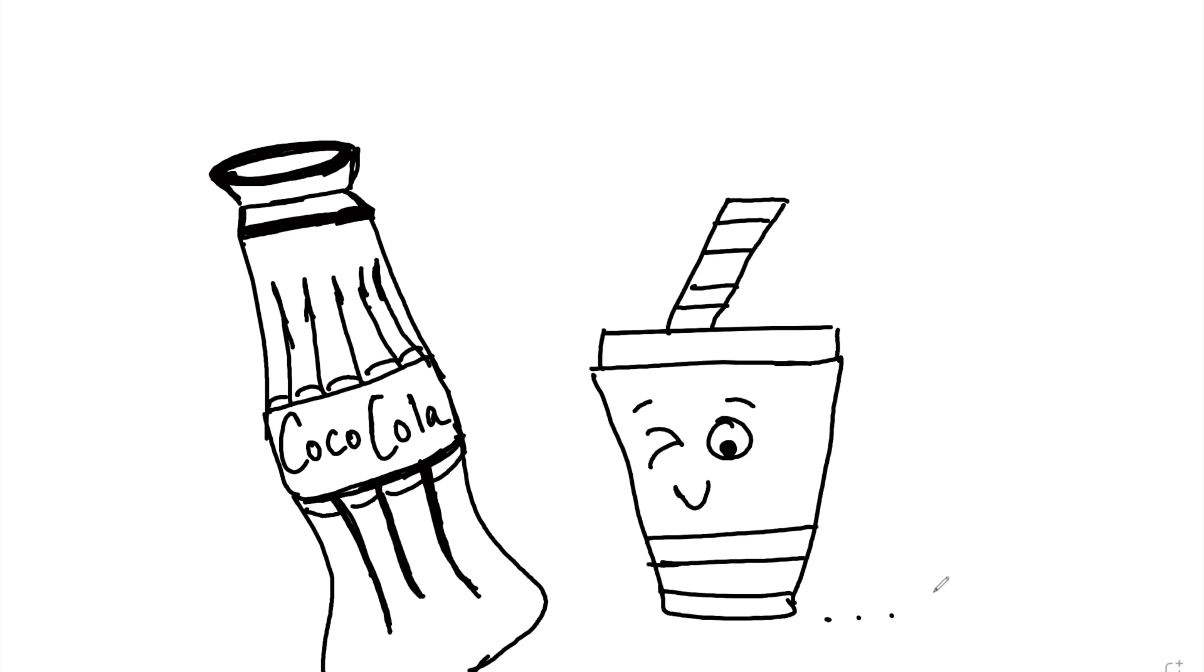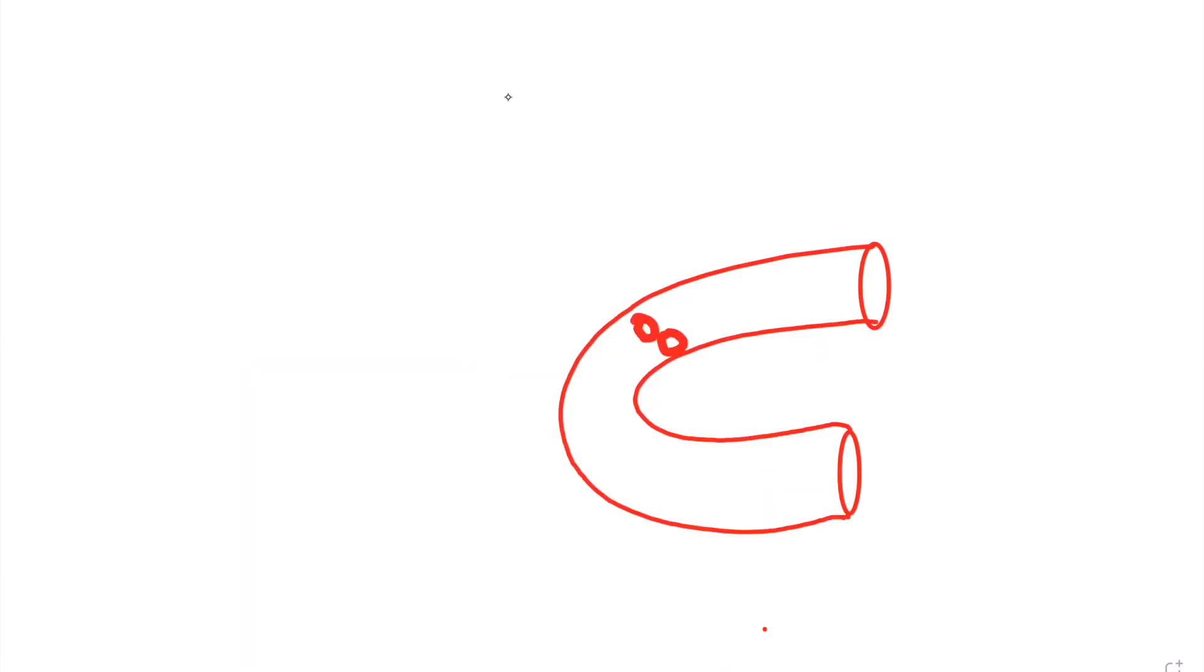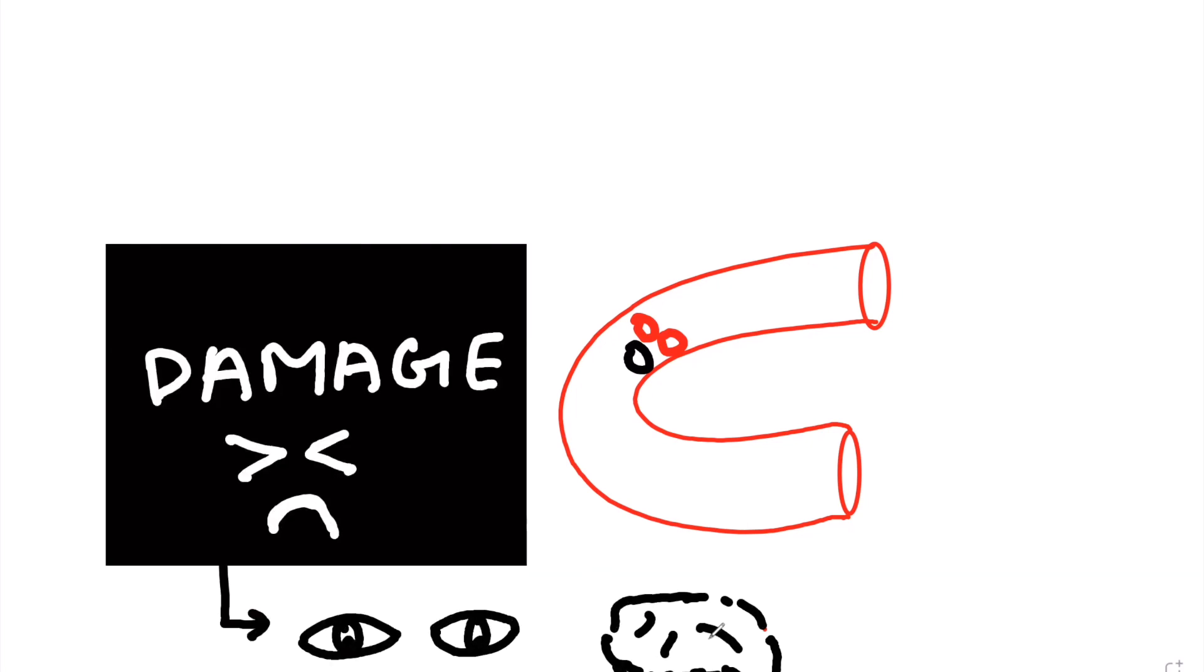Too much sugar may lead to health problems like diabetes and obesity. Excess sugar consumption can lead to blood vessel damage, which can ultimately lead to damage of brain and eye blood vessels.